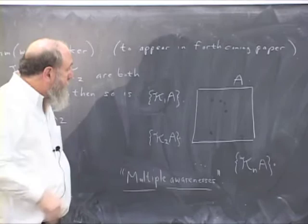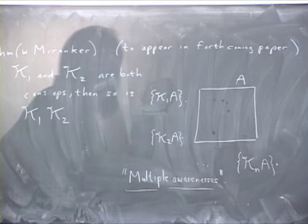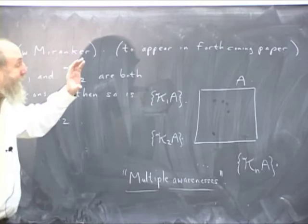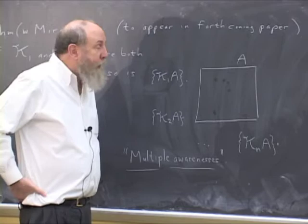I think this picture kind of speaks for itself. If you think about objectification as a process, then by appending to A all of these points of observation, you're objectifying A through a sequence of operators.